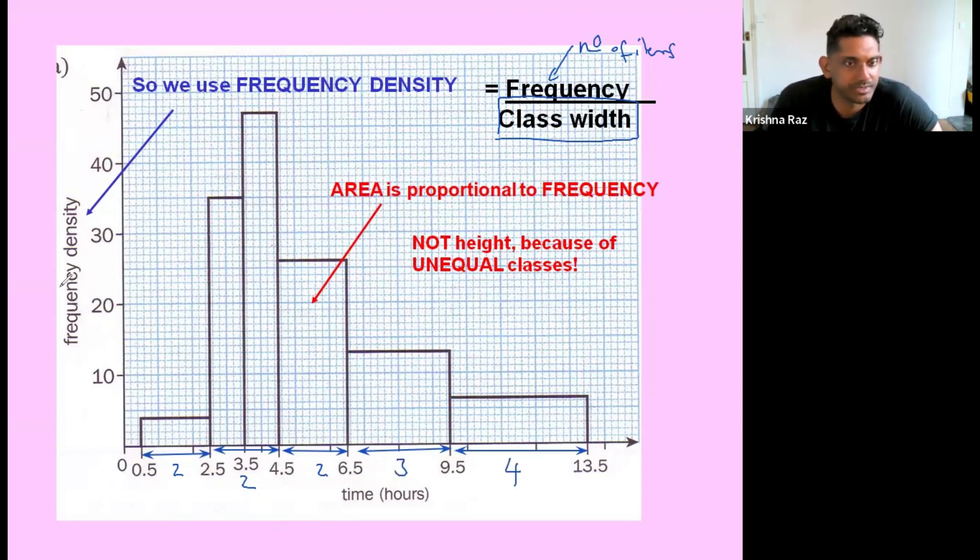Just spotted a mistake. There's two bars there. So each of these would be one and one. Yeah, so that's the class width. So when we say the class width is the width of the interval.